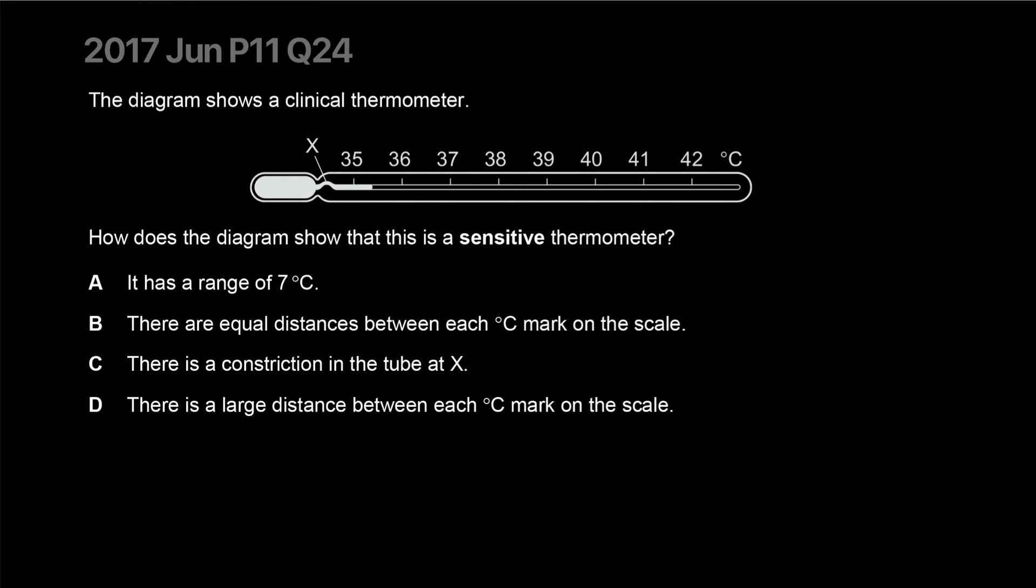The diagram shows a clinical thermometer. How does the diagram show that this is a sensitive thermometer? Because it's scaled a lot. It has a range of 7. Well that doesn't mean it's sensitive. It has a range. There are equal distances between each C marked on the scale. That is only because the mercury expands equally. There is a constriction in the tube at X. So that prevents the flow back of mercury once it's expanded.